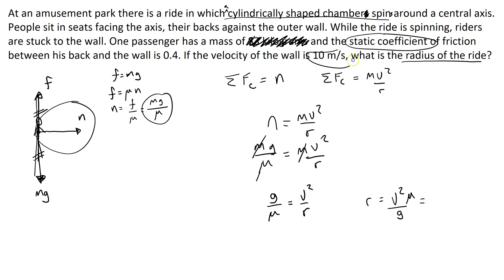Now I have everything we need. We've got 10 meters per second, got the coefficient of friction, and I know g is 10. So, 10 meters per second, the whole thing squared times mu, which is 0.4, and then we divide that whole thing by 10 meters per second squared. And this comes out to 4 meters.